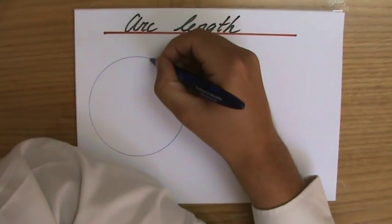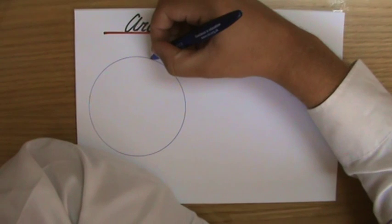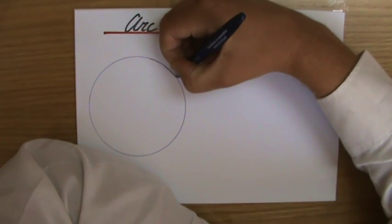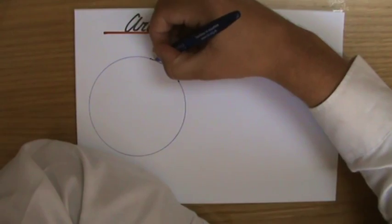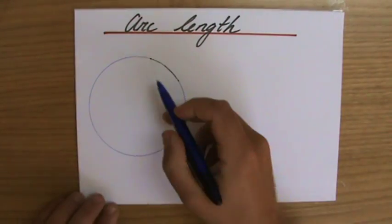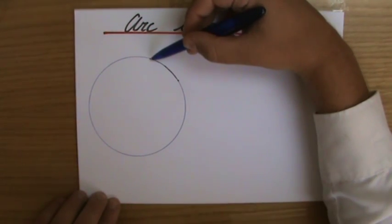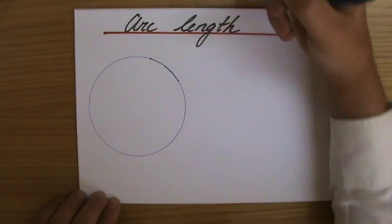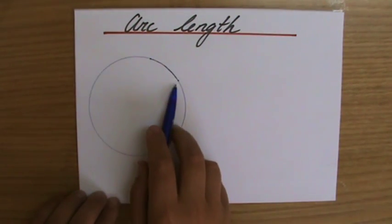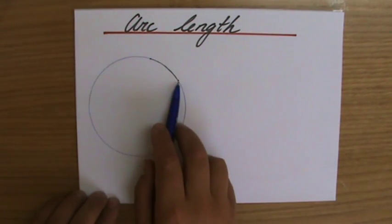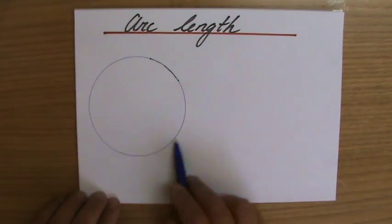So for instance, from here, you could go all the way to here, and that is an arc because that is a part of the whole circumference. And how can I find out the length of this arc? The length of this part of the whole circumference.